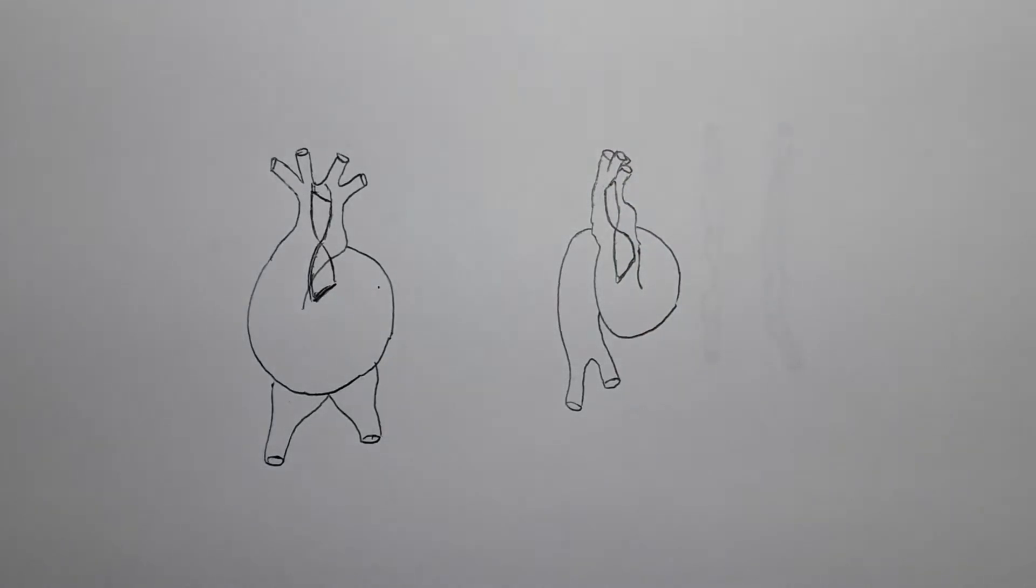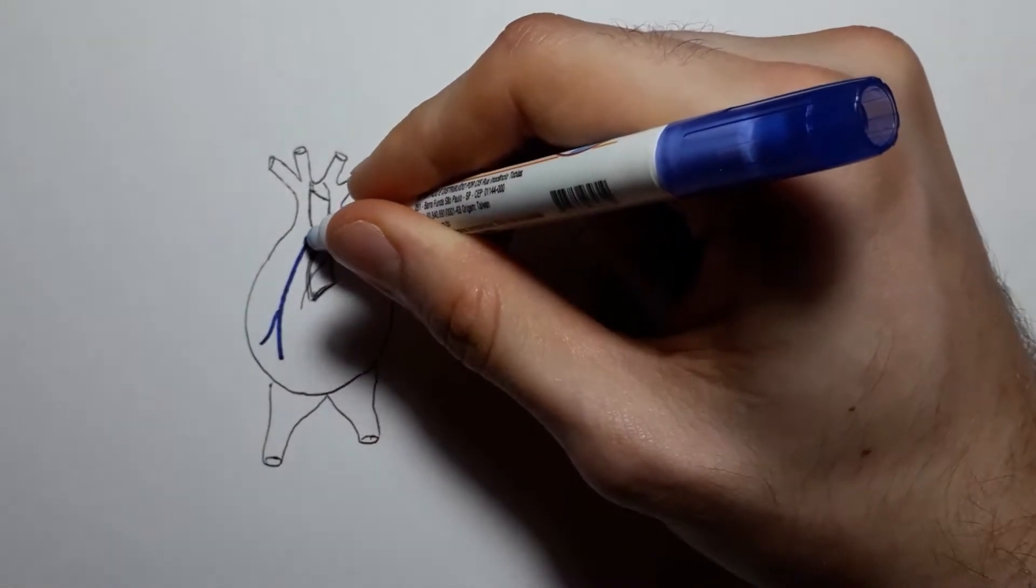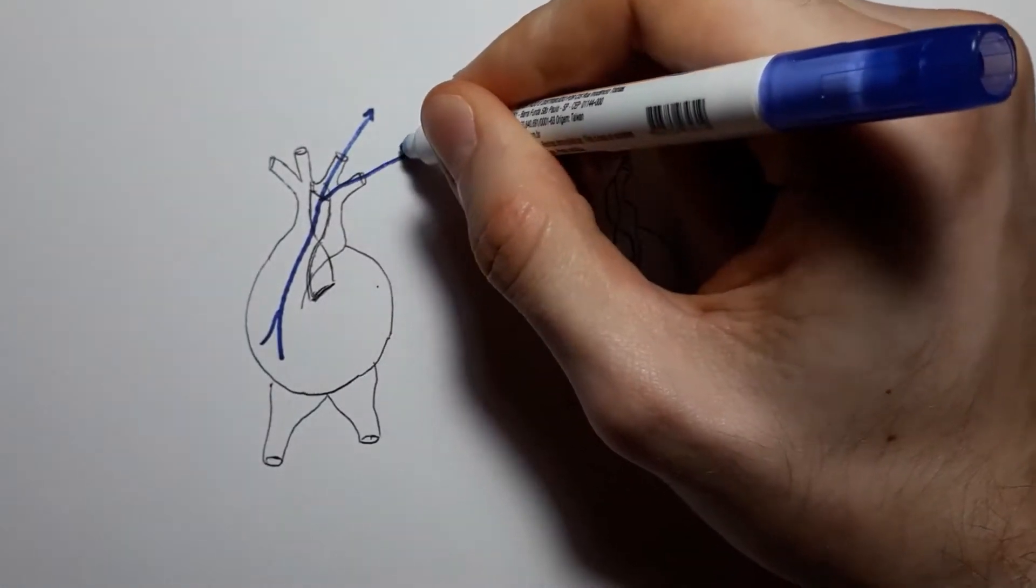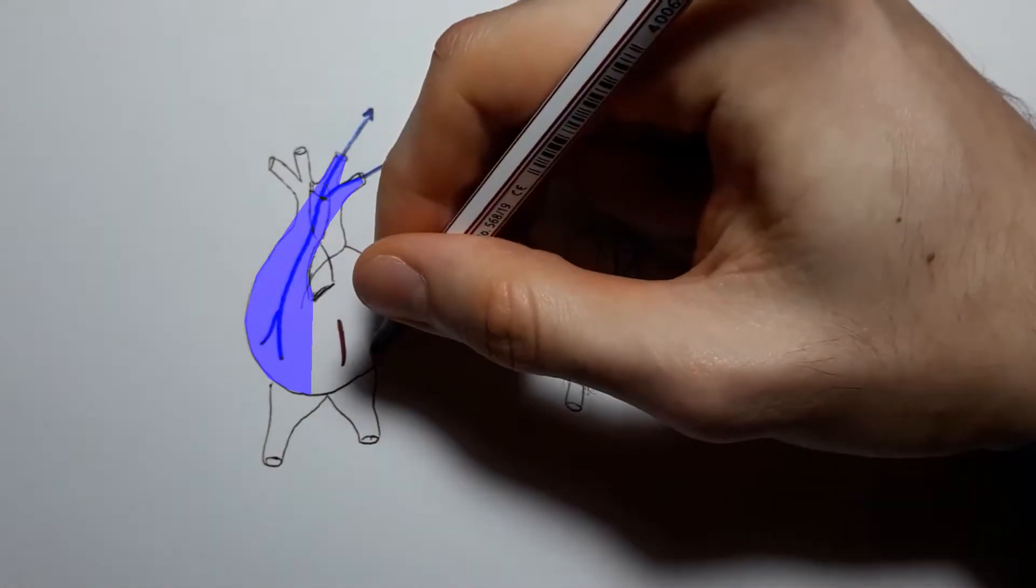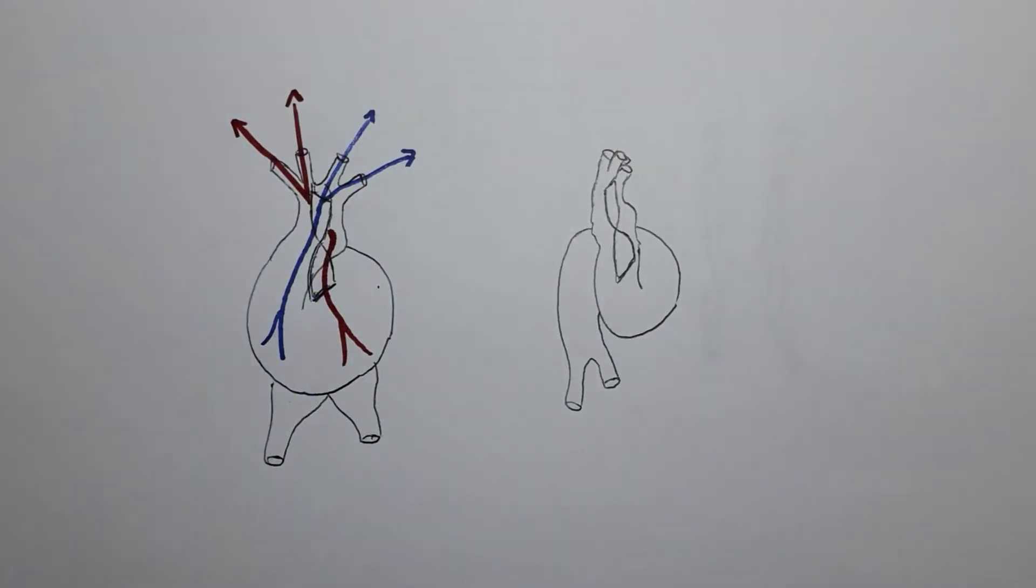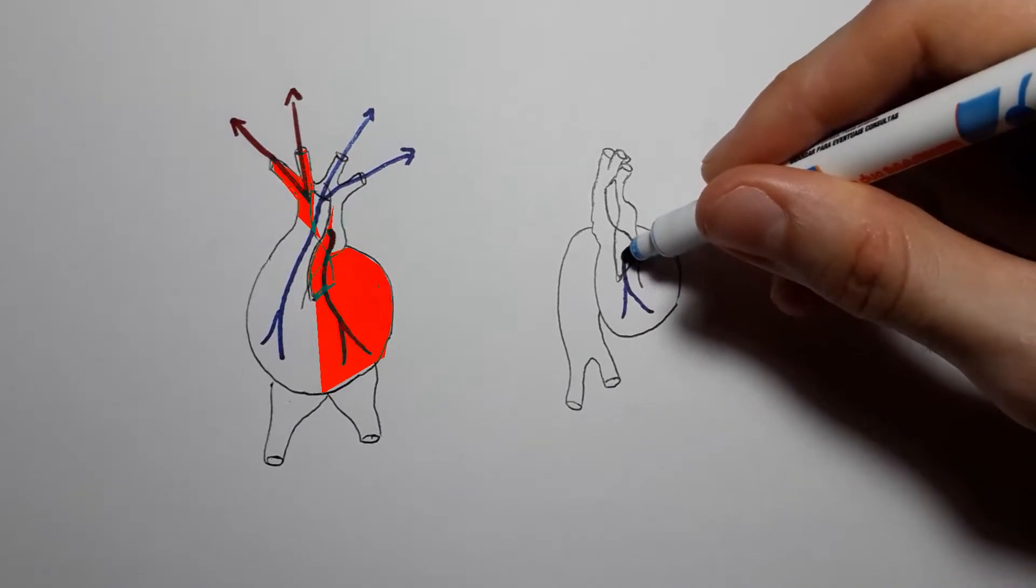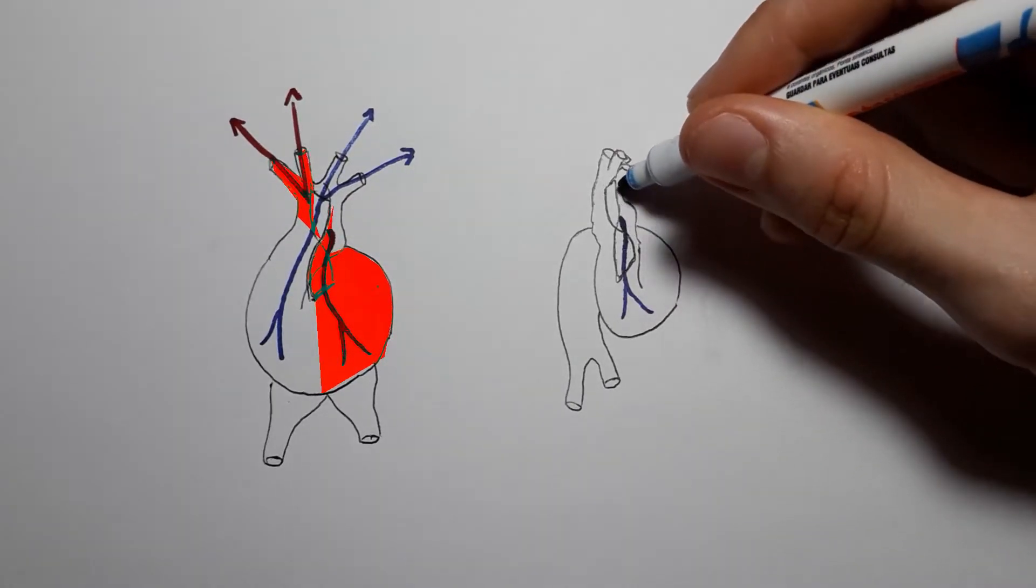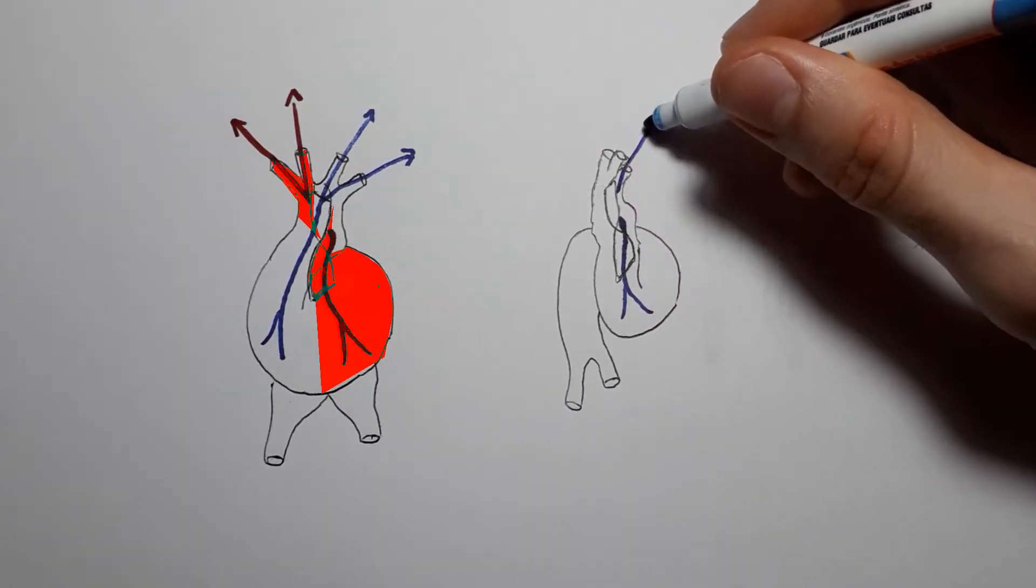This way, the right ventricle pumps deoxygenated blood into the pulmonary trunk, which is to the left of the aorta, while the left ventricle pumps oxygenated blood into the aorta, which is to the right of the pulmonary trunk.